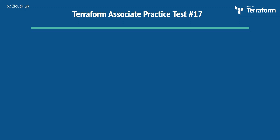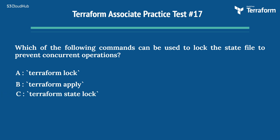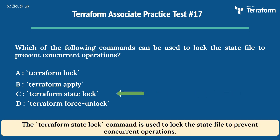The seventeenth question: which of the following commands can be used to lock the state file to prevent concurrent operations? Options are: A) terraform lock, B) terraform apply, C) terraform state lock, D) terraform force-unlock. The right answer is Option C, terraform state lock. The terraform state lock command is used to lock the state file to prevent concurrent operations.